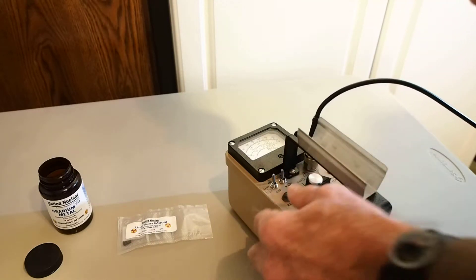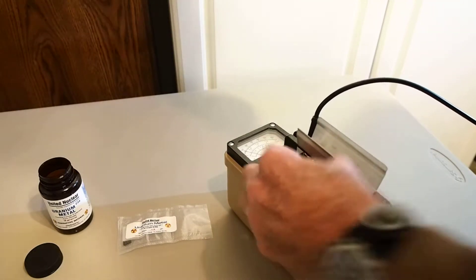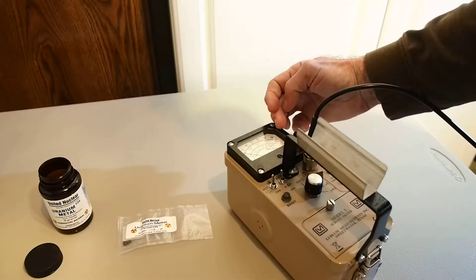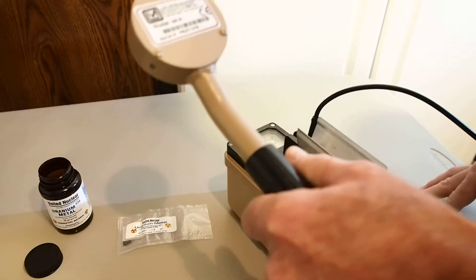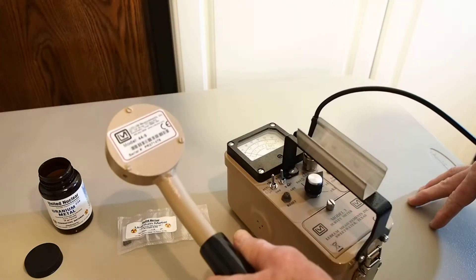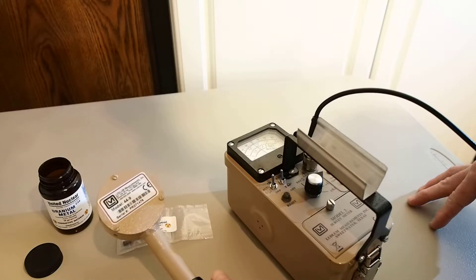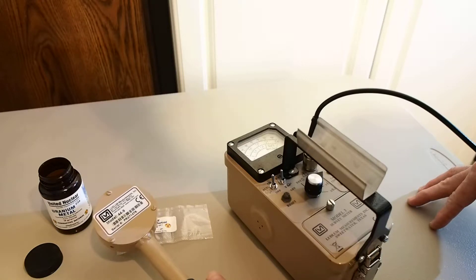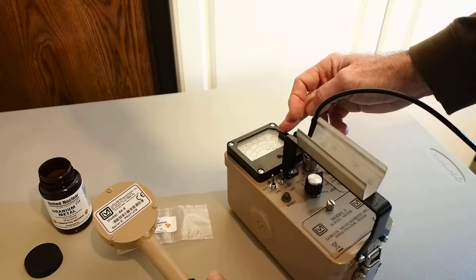So we'll restart our instrument, move up to the one times setting, which will give us a true reading on the scale up to about 6,600 counts per minute. Move the 44-9 detector close to the specimen again. As we get closer, within approximately an inch and a half of the specimen, we're off scale again, which means that it's emitting more than 6,600 counts per minute.